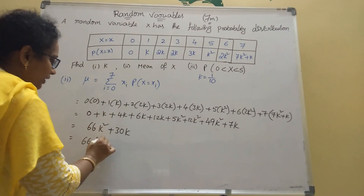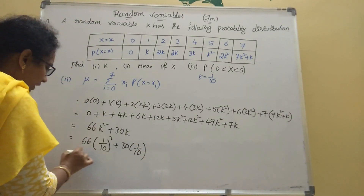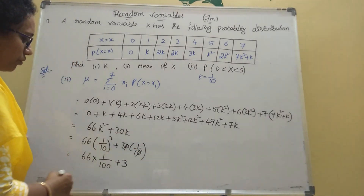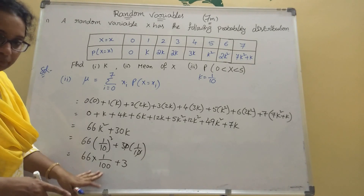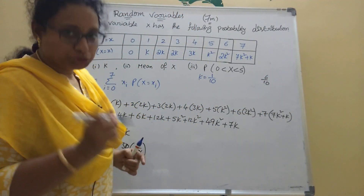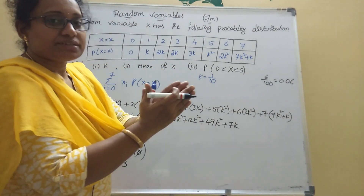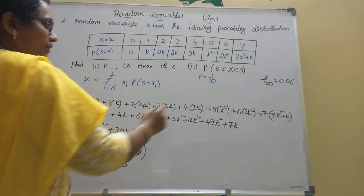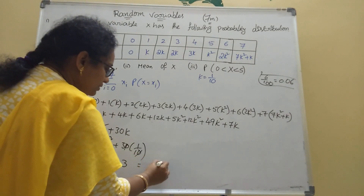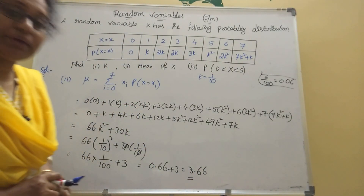66 times 1/100 gives 66/100, which equals 0.66. And 30 times 1/10 gives 3. For example, 6/10 is 0.6, and 6/100 is 0.06 — the point moves two places left. So the mean equals 0.66 plus 3, which is 3.66. That is the mean.